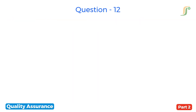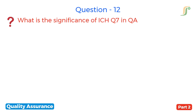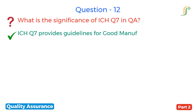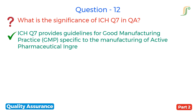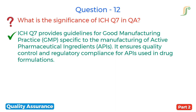The twelfth question is: what is the significance of ICH Q7 in QA? ICH Q7 provides guidelines for good manufacturing practice specific to the manufacturing of active pharmaceutical ingredients. It ensures quality control and regulatory compliance for active pharmaceutical ingredients used in drug formulations.